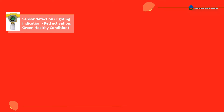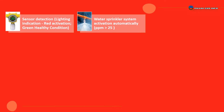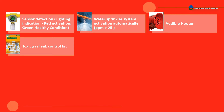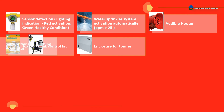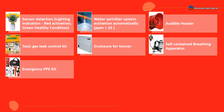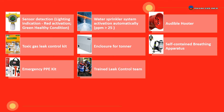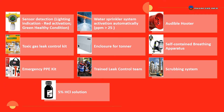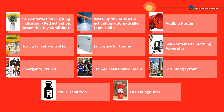Emergency systems include: sensor detection with lighting indication — red for activation, green for healthy condition. Water sprinkler system activates automatically at 25 ppm. Audible hooter. Toxic gas leak control kit. Enclosure for tonner. Self-contained breathing apparatus (SCBA). Emergency PPE kit. Trained leak control team. Scrubbing system. 5% HCl solution. Fire extinguisher.